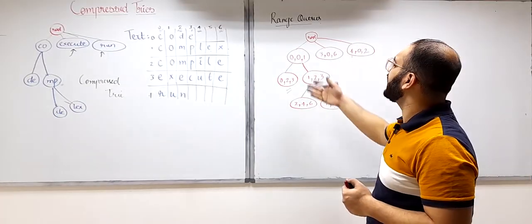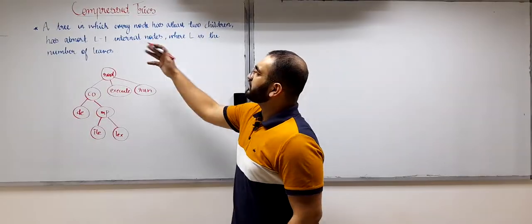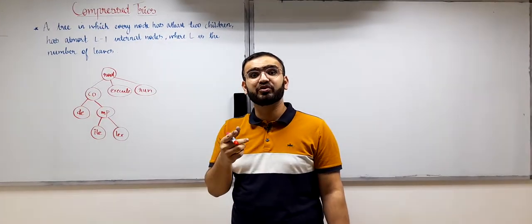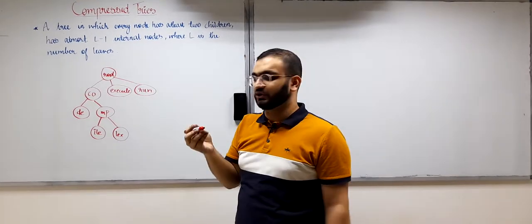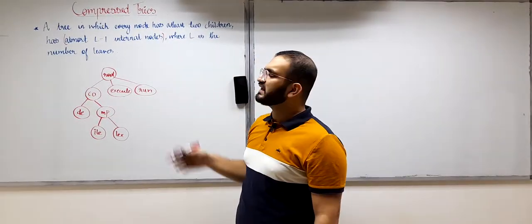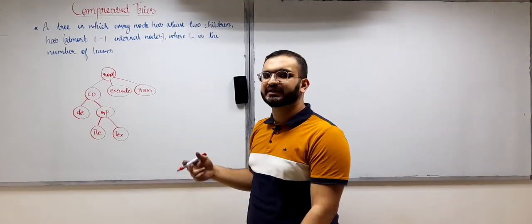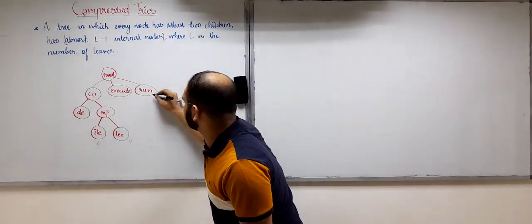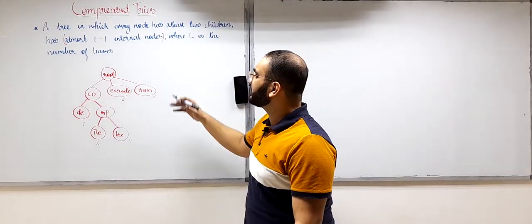Now let us see how compressed tries decrease the space complexity. There is a key statement: in a tree where every node has at least two children, there are at most L minus 1 internal nodes, where L is the number of leaves. You can prove this easily using mathematical induction. In a compressed try every node has at least two children, so this applies.